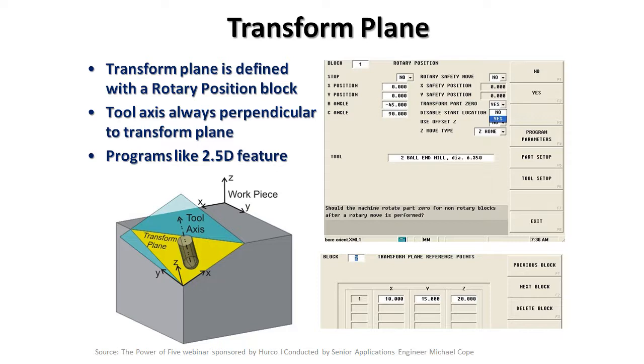After we've used the rotary position block to position the tool or workpiece in the desired location and locked those axes down, we use reference positions, which are measured distances from the original location to where the new location for this second side resides on the part.